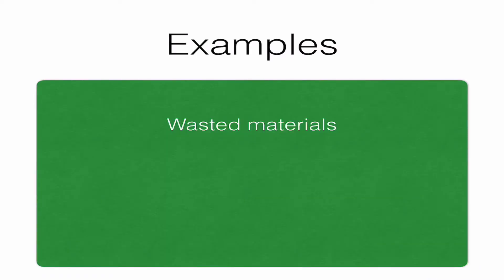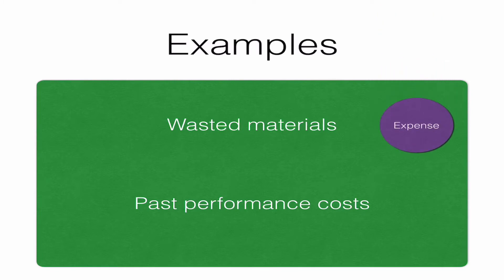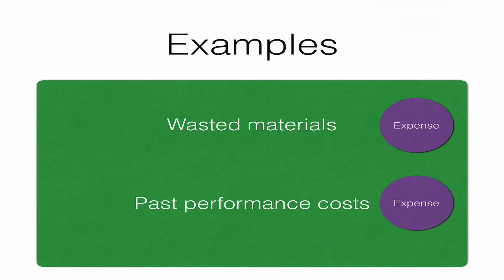What about wasted materials and past performance costs? Wasted materials, wasted labour, or other resources that are not reflected in the price of the contract — those can't be capitalised, they must be expensed. Also, costs related to satisfied or partially satisfied past performance obligations must also be expensed.